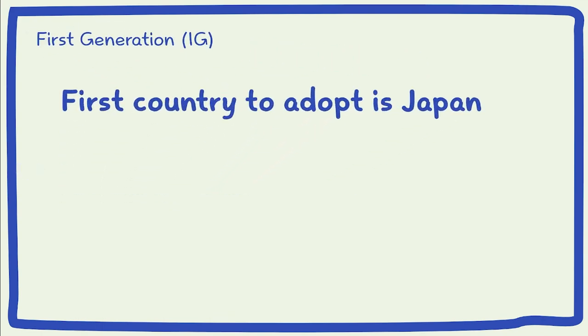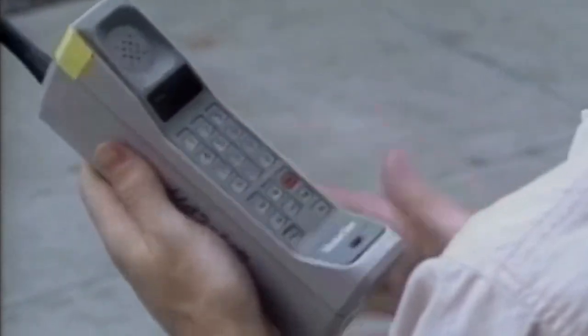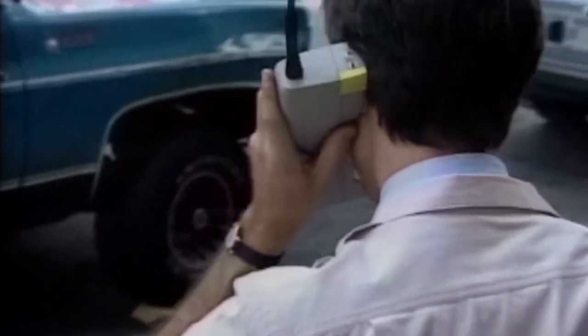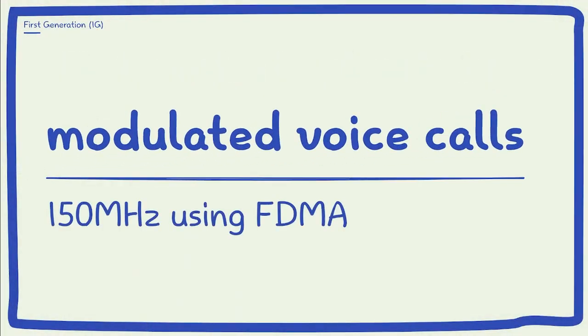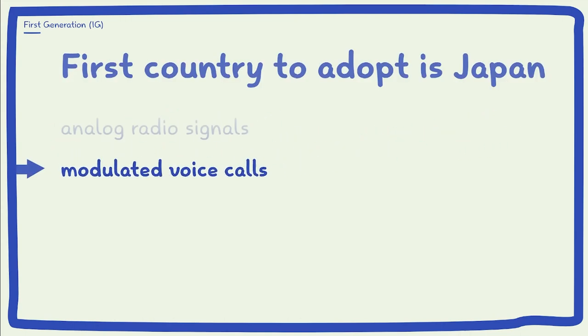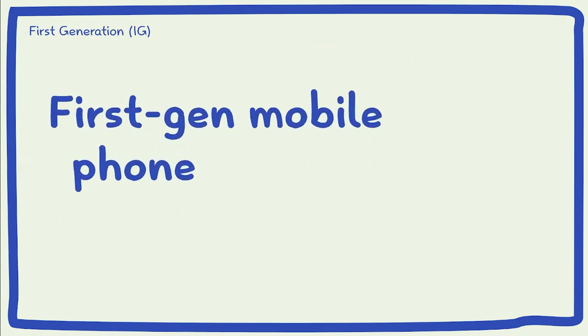Japan was the first country to adopt 1G technology, which quickly spread around the world. 1G technology used analog radio signals and modulated voice calls to a higher frequency of around 150 MHz using Frequency Division Multiple Access.